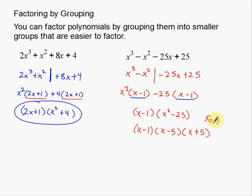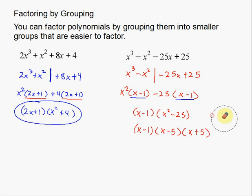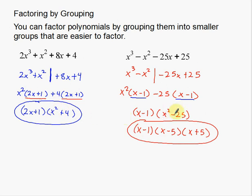The outers: x times 5 is 5x. The inners: negative 5 times x is negative 5x. Positive 5x and negative 5x cancel to zero, so I have no middle x term, which makes sense. That confirms x squared minus 25 factors correctly as x minus 5 times x plus 5 — that's the difference of two squares factoring. Whenever you have x squared expressions, always check if you can factor further. In the first example we could not, but here we could.